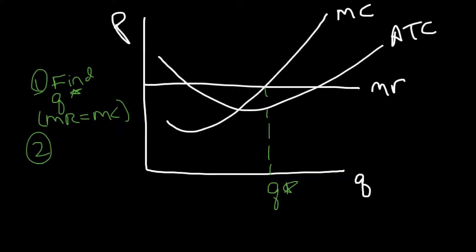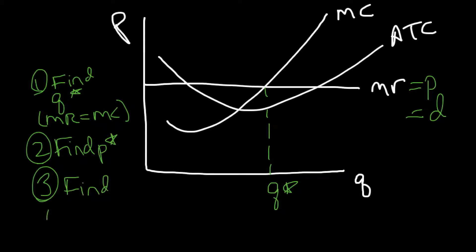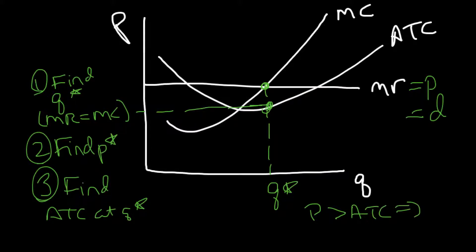Step two: find the P* — the price you'll be charging — which is easy in perfect competition because marginal revenue equals price. Step three: find the average total cost at Q*. Bring Q* up to the average total cost curve. If price is greater than average total cost, that means profit. You're making that much profit on average per unit, and that amount of profit on every unit you produce, so the entire rectangle is your profit.